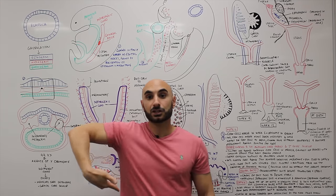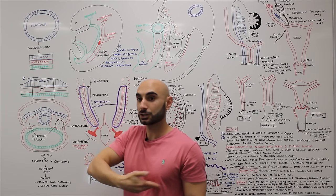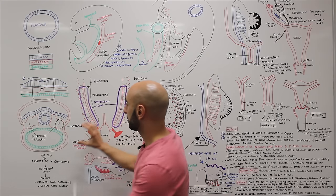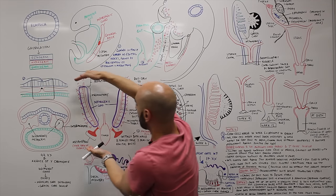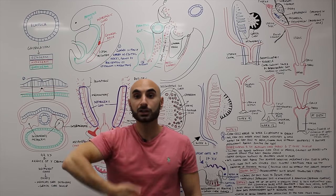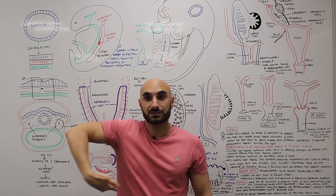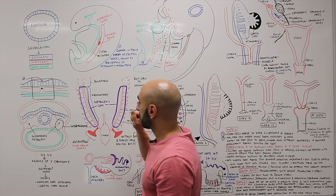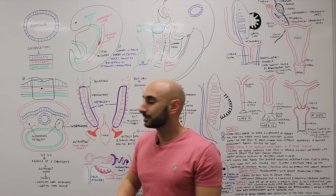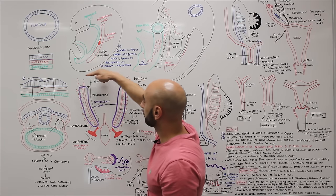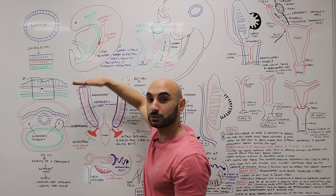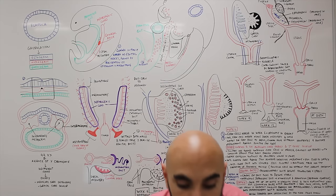This is a cross-section of the fetus. If we look at the intermediate mesoderm, cut it and flip it up, we will have this structure here. Don't let this confuse you — this is a longitudinal view, and this is a cross-sectional view where this is a single snapshot in time. However, this is a time-lapse.